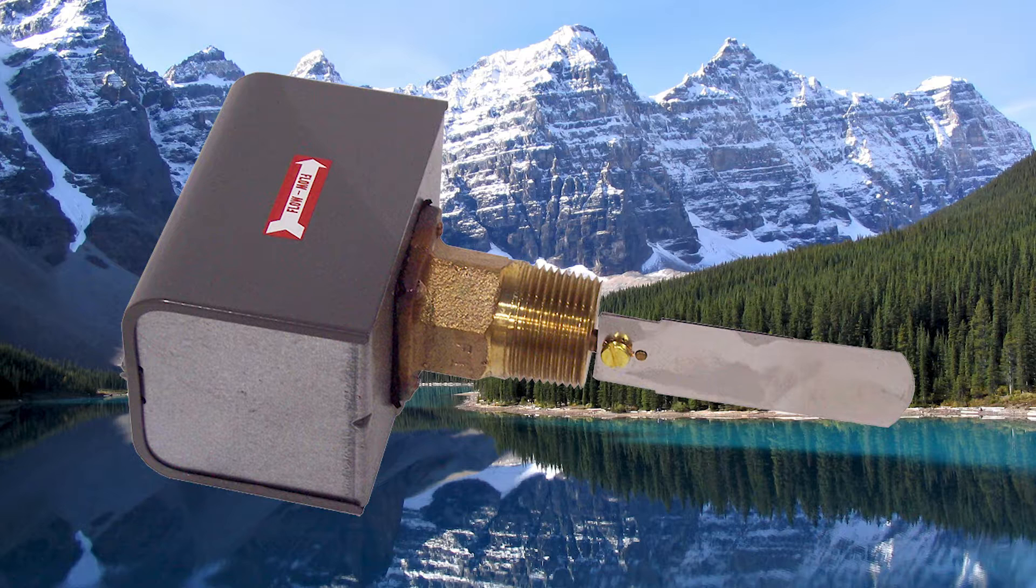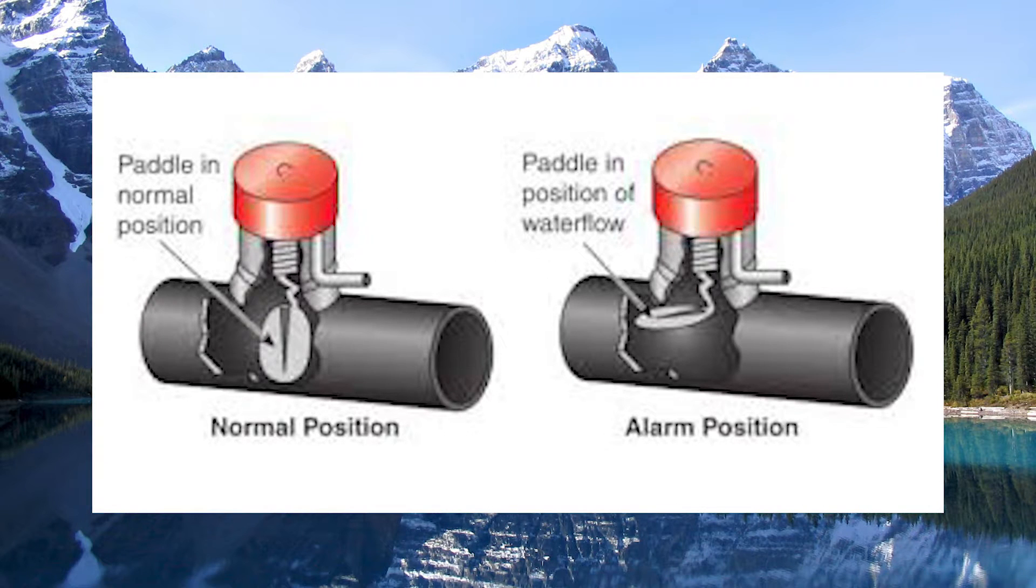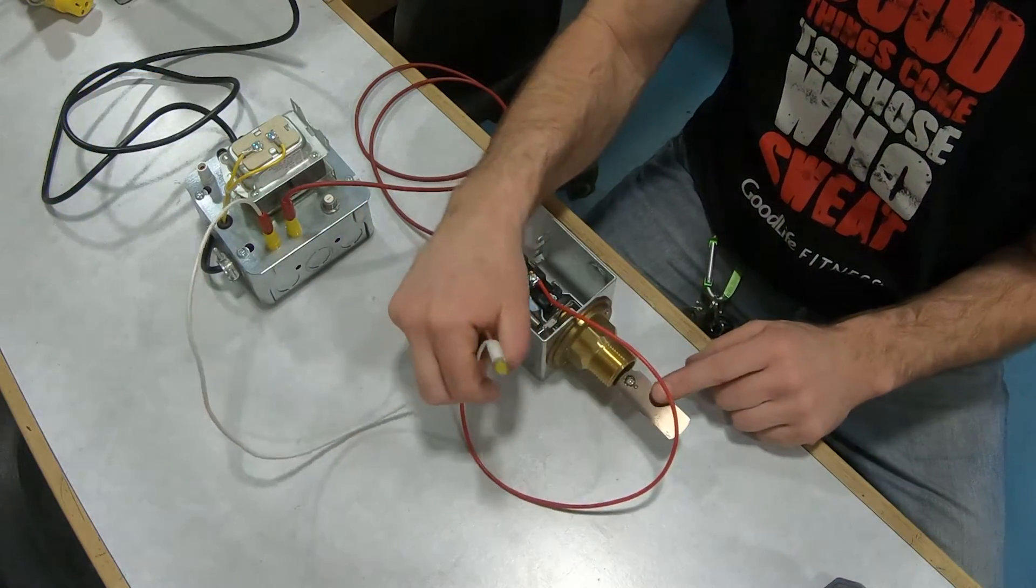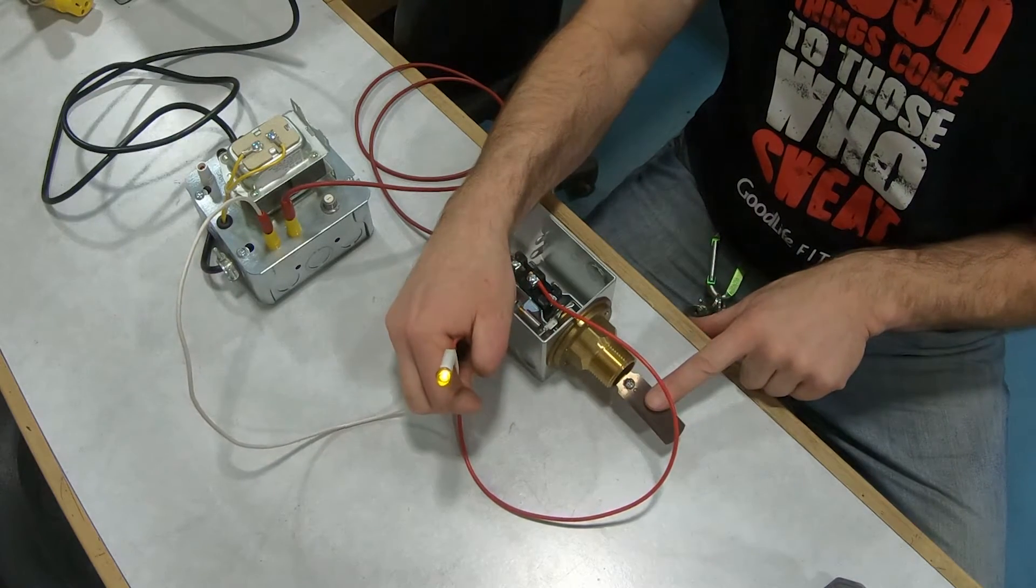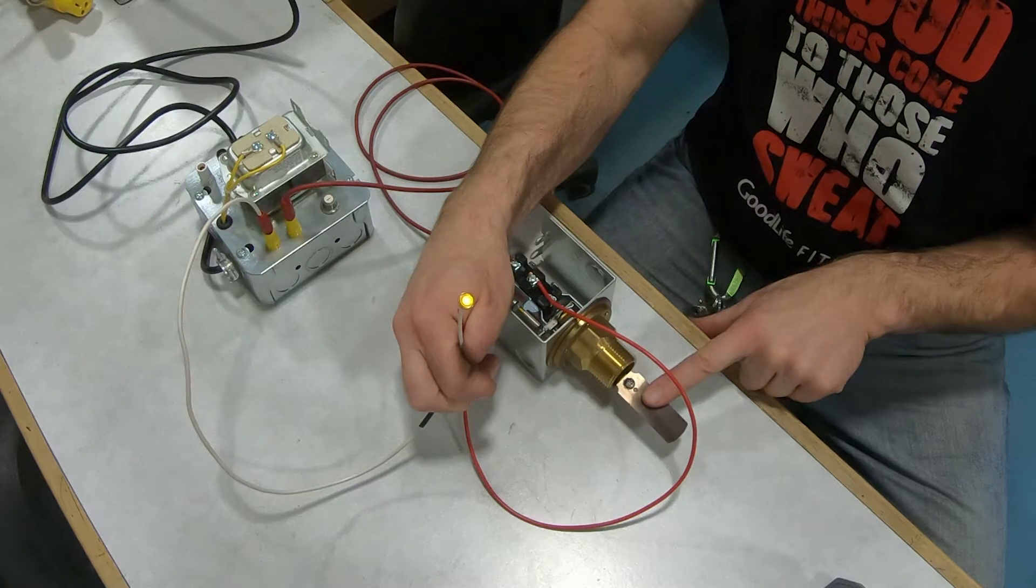The next type of device we come across in the field is called a flow switch. Its symbol looks like this. This is a device that has a sensing element that sits right inside a pipe, and when water flows past it, it will turn the switch off or on. Right now it is in the open position, and when I flip the switch down by pressing this leaf, the LED comes on. We are in the closed position now.